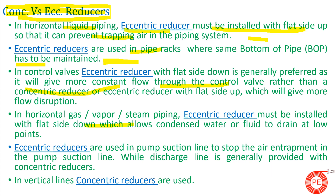In horizontal gas, vapor, and steam piping, eccentric reducers must be installed with the flat side down, which allows condensed water or liquid to drain at low points. Eccentric reducers are used on pump suction lines to stop air entrapment, while the discharge line is generally provided with concentric reducers.